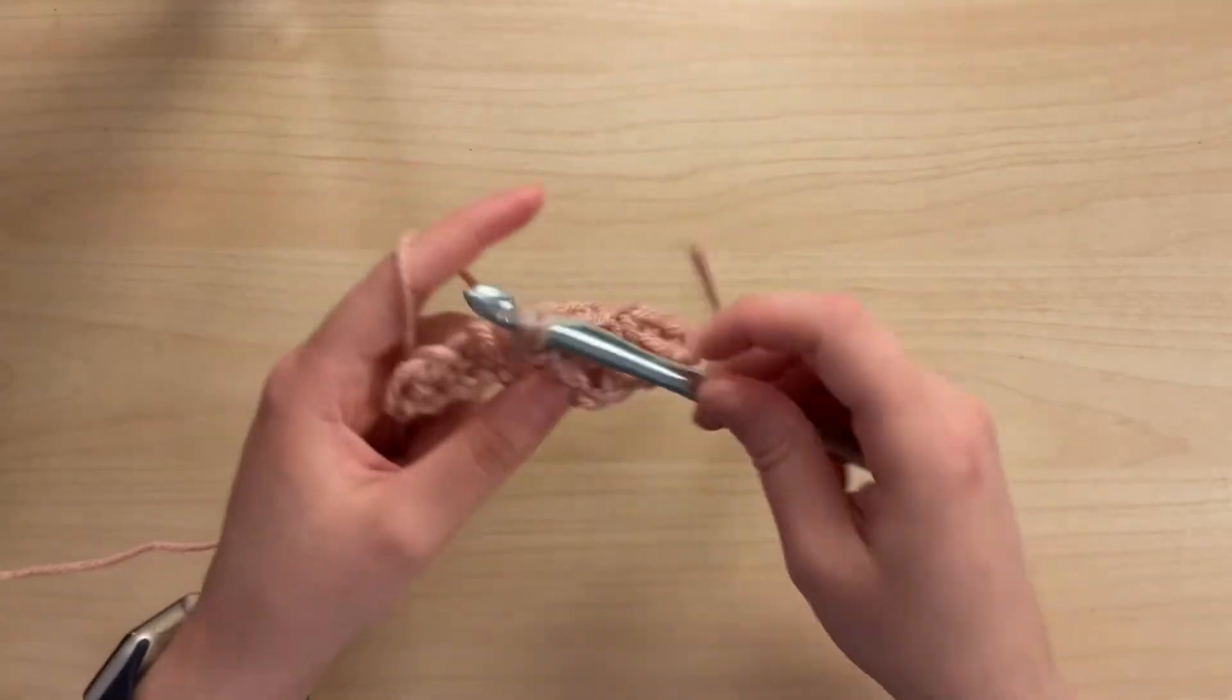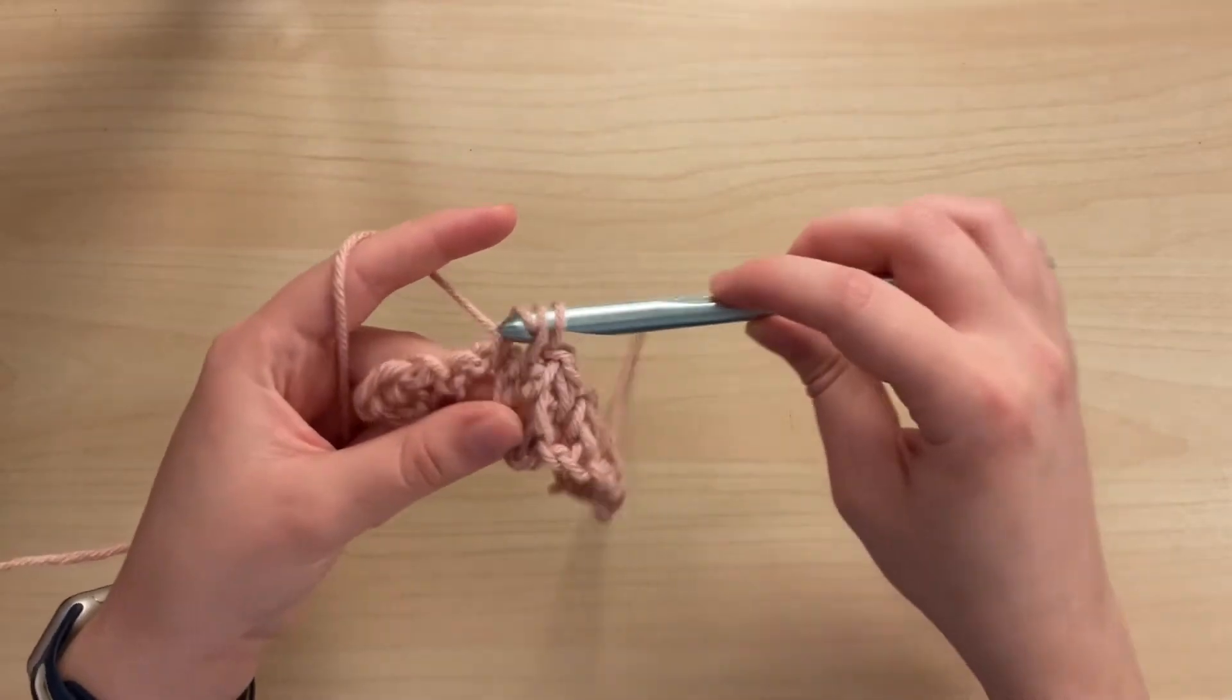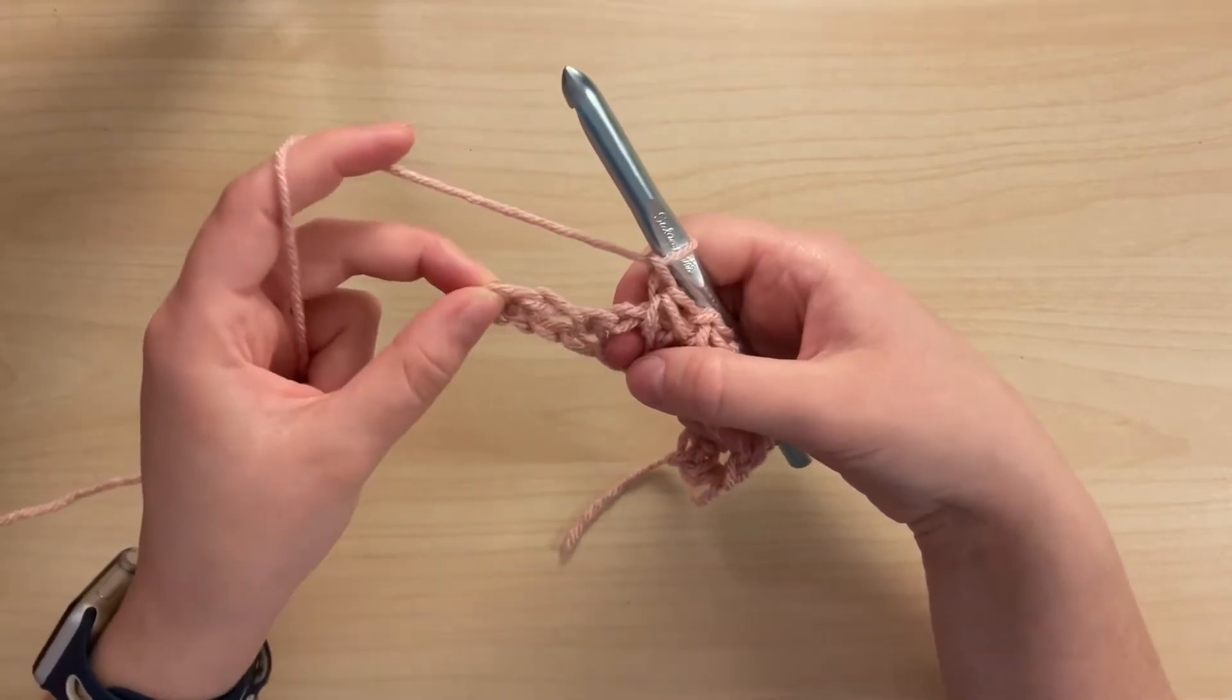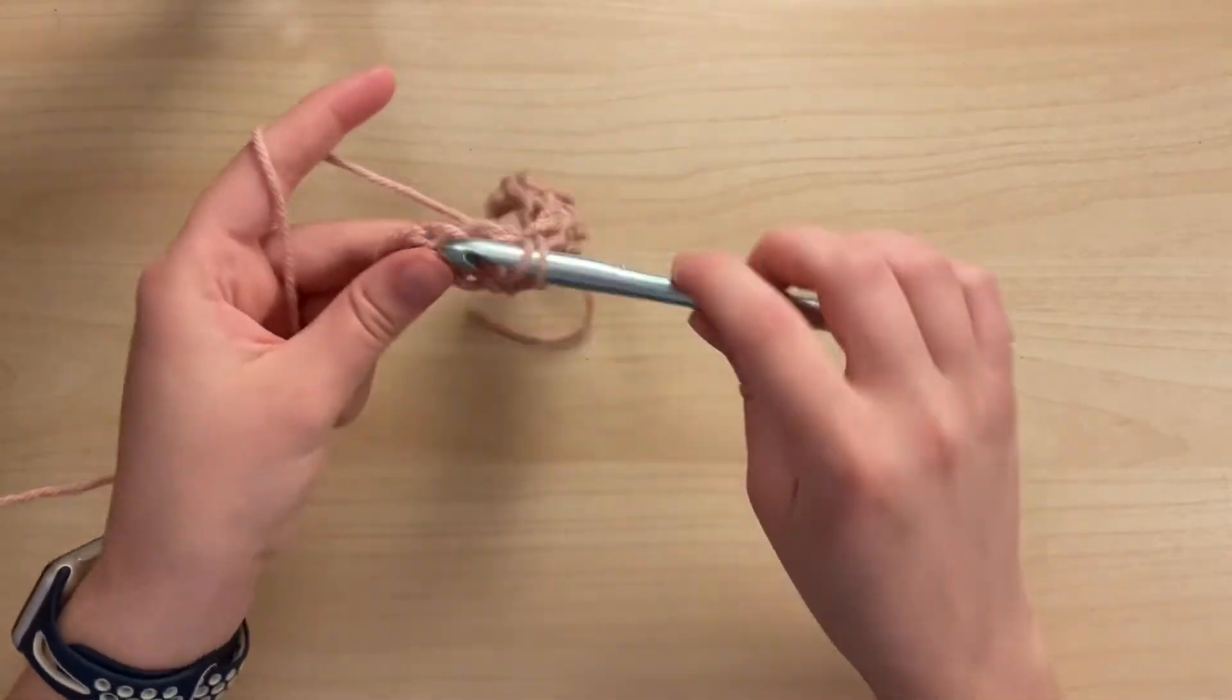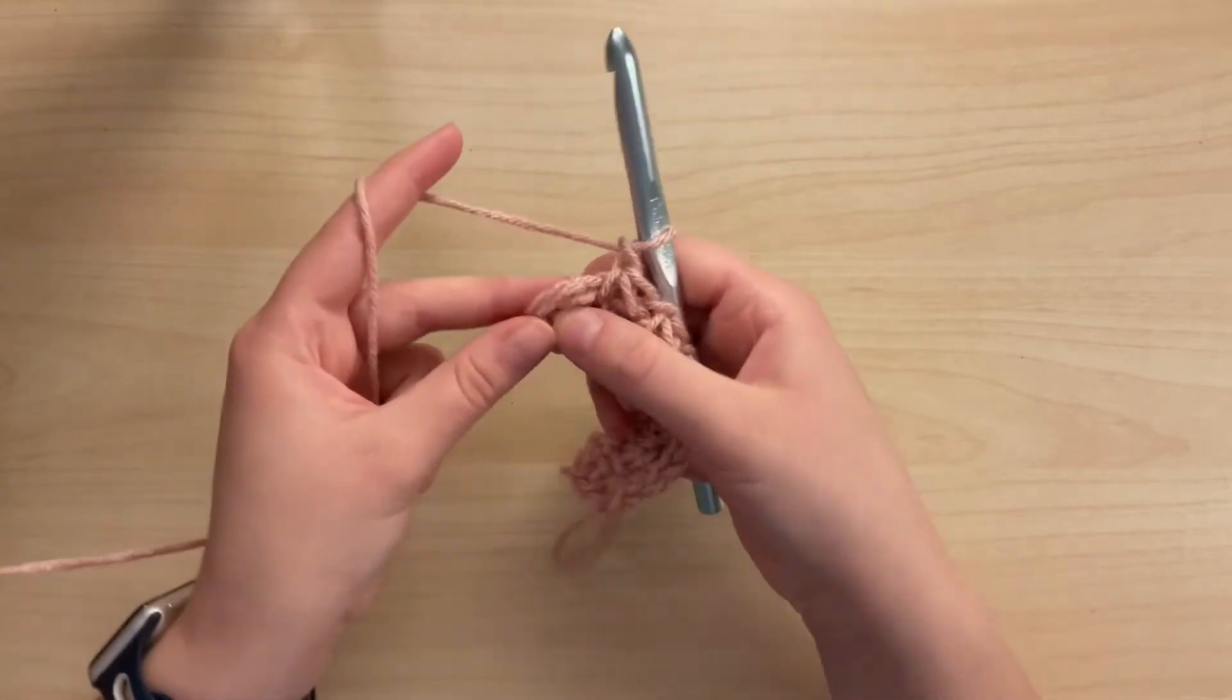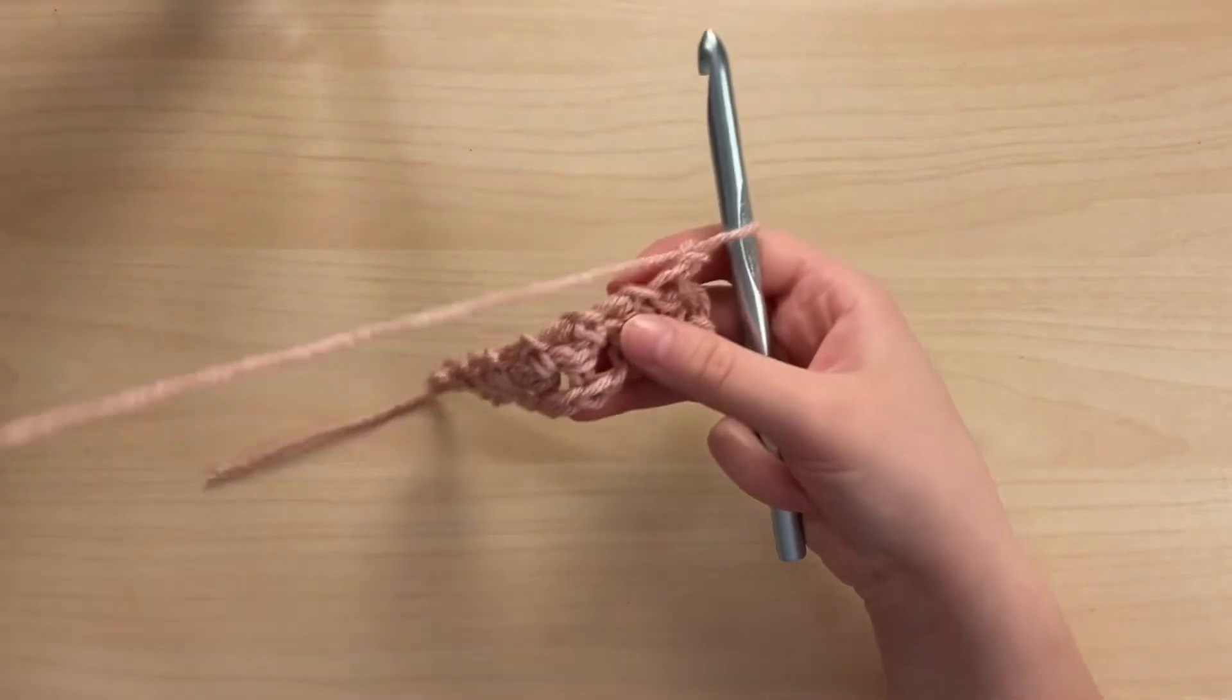So we'll place, pull up a loop in the same space as before and into the next chain space, pull through all three loops and chain one. And on your last, you should have two loops left and your stitch for the end of the row. So we'll place one more single crochet two together. Then we'll chain one and place a single crochet in this last stitch of the row.